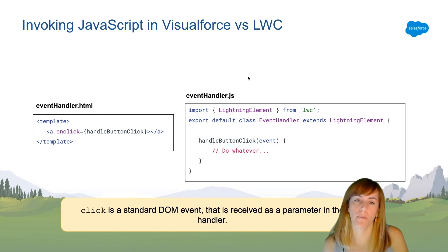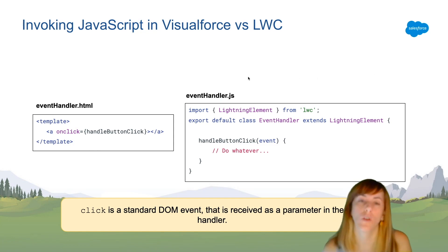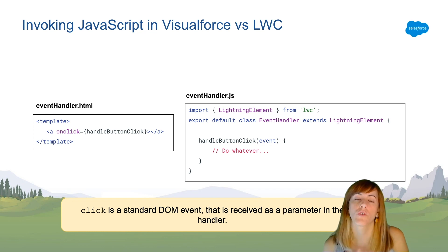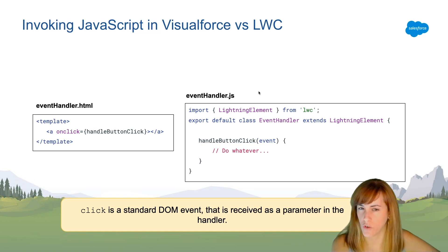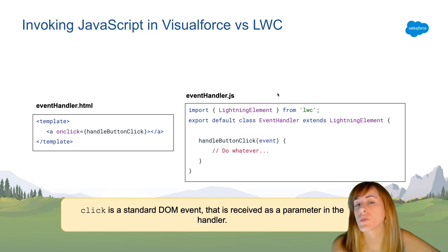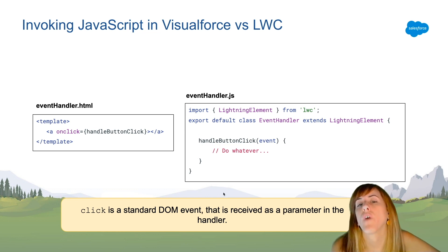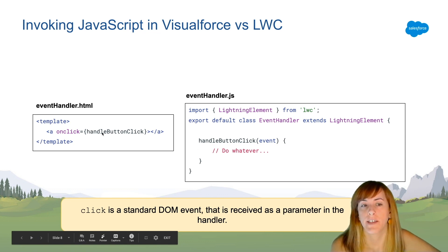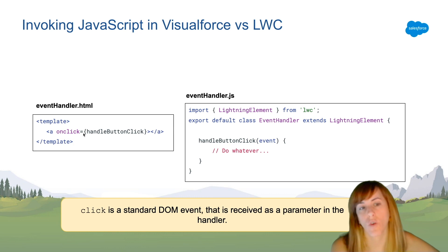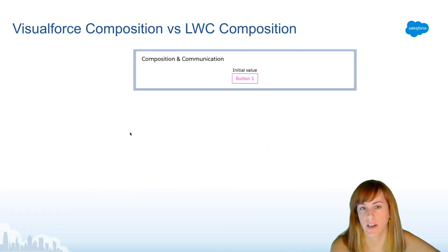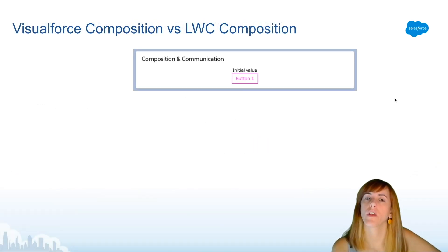If you want to include and execute functions that are part of a static resource, you can do that in JavaScript. You import the resource, load it, and then invoke functions within your component. But the way to call JavaScript code is always by binding an event handler.